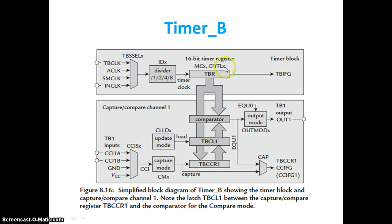The CNTLX is a 2-bit register that varies the counter register size. This CNTLX bit can set the timer counter register size to 8, 10, 12, or 16 bits. By default, if you have not set this CNTLX bit, it is going to work as a 16-bit counter. But if you change the CNTLX values, it will choose 8, 10, or 12 bits.